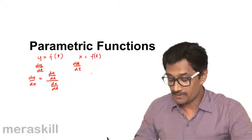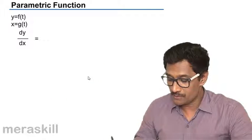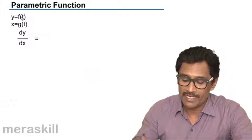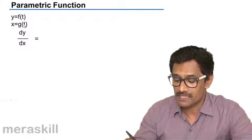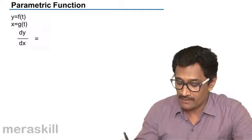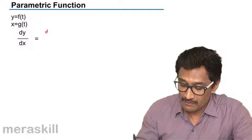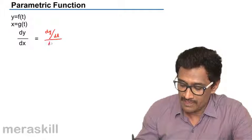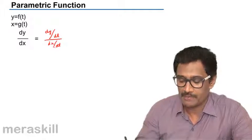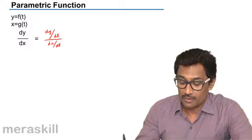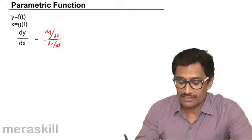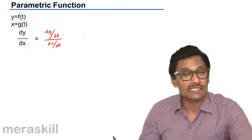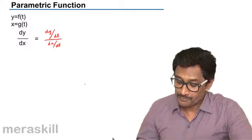This is the concept of parametric functions. If you see mathematically, dy by dt times dt by dx - that gets cancelled and you get dy by dx. So suppose you have something like this - now I want to find dy by dx.